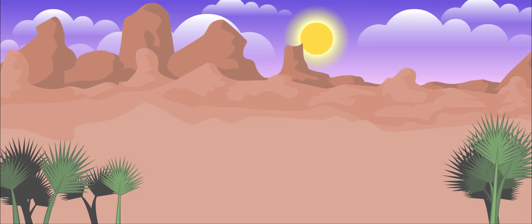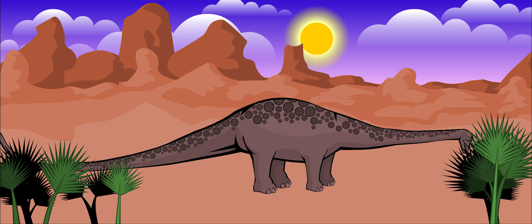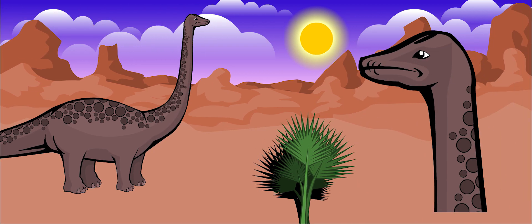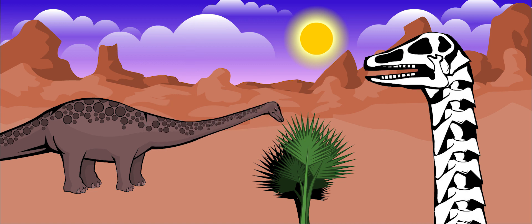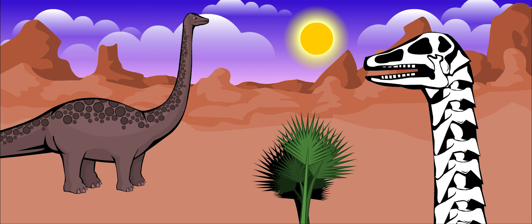Diplodocus was an herbivore, meaning that it only ate plants. It had small, blunt teeth, but only at the front of its mouth. This was useful for stripping leaves off of trees. But it also meant that it probably couldn't chew its food.